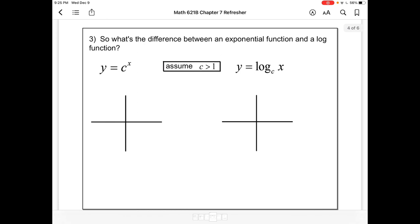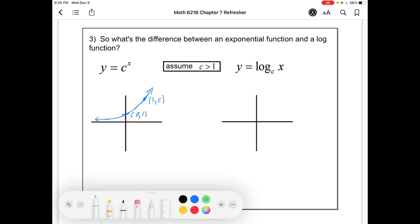So now hopefully we've revived some of our knowledge of exponential functions. And we might be saying, okay, I remember that. But like, what's the difference between an exponential function and a log function? And often on a test, I'll see them get mixed up when people graph them. So let's graph a basic one. Let's assume that the c value or the base is greater than 1 just so that we can have kind of comparable graphs. But your exponential function is going to look like this. And it's going to have a point of 0, 1 because anything to the power of 0 is just 1. And you'll also have a point of 1, c.